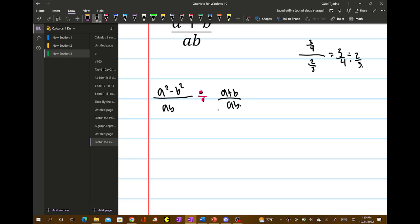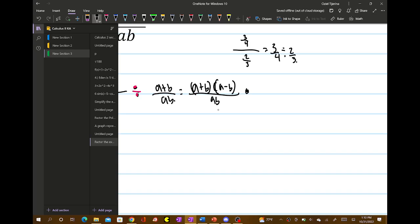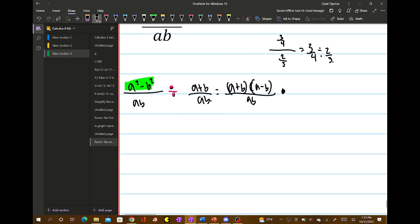So a squared minus b squared can be rewritten as a plus b times a minus b over ab. And now we're going to multiply by the reciprocal. The reciprocal just means flip it over. So ab over a plus b.